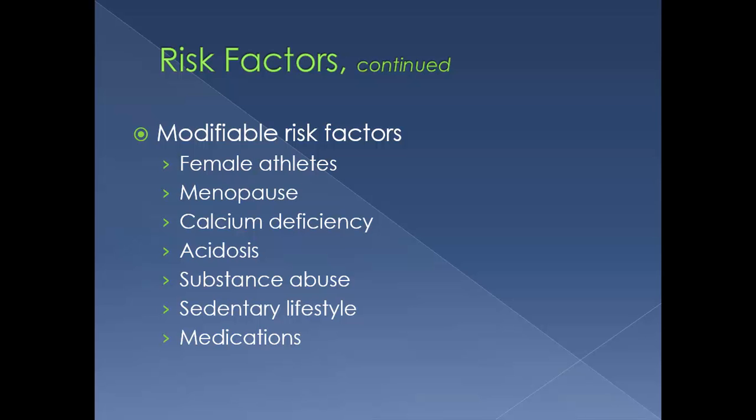Menopause and decreased estrogen levels cause bone loss to accelerate. Estrogen enhances calcium absorption and stimulates the thyroid to secrete calcitonin, which is a hormone that suppresses osteoclast activity and increases osteoblast activity.